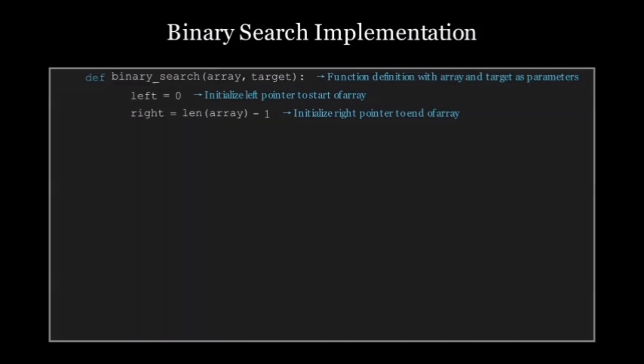Then we enter a while loop. The condition is left less than or equal to right. This loop keeps running as long as there is a valid search space. Inside the loop, we calculate the middle index: mid = (left + right) // 2. This is where the magic happens. We check the middle element.